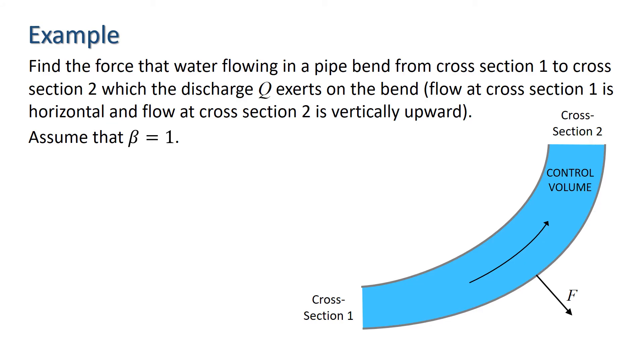Let's take a look at this example in which we want to find an expression for the force of the water on a 90 degree vertical bend in a pipe. We will apply the momentum equation which I write in the form momentum in plus sum of the forces equals momentum out and we note that in this case the flow into our control volume is horizontal and the flow out is vertically upward. In other words U1 is horizontal and U2 is vertically upward.